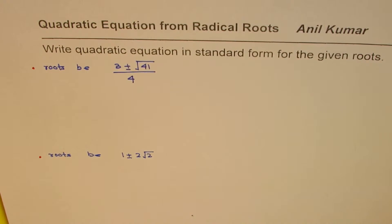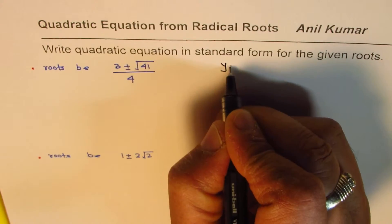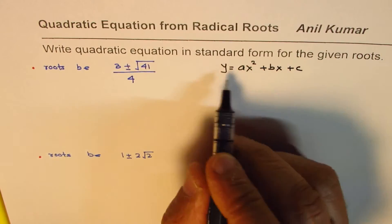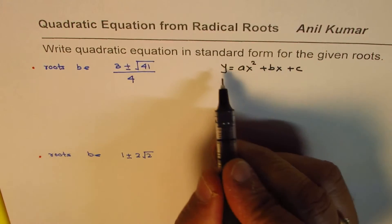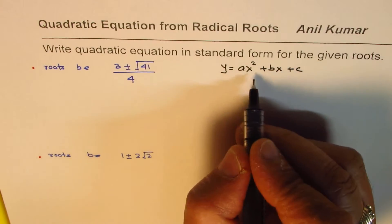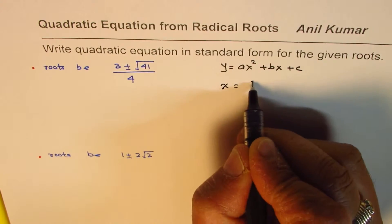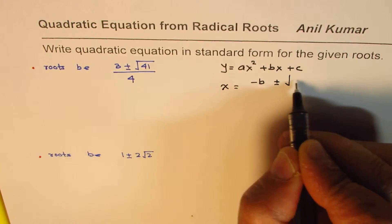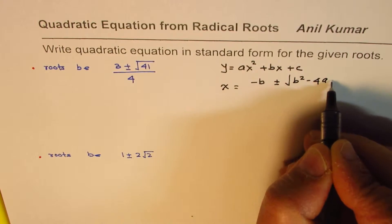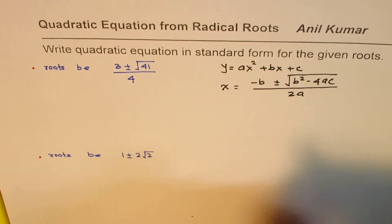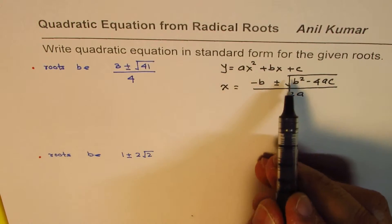Before getting into the solution, let me give you the concept. A quadratic equation is written in the form y = ax² + bx + c. For a quadratic equation in this form, you can find the value of x — called the roots or solution — which will be x = (−b ± √(b² − 4ac)) / (2a). That is the solution, and that is the radical part.